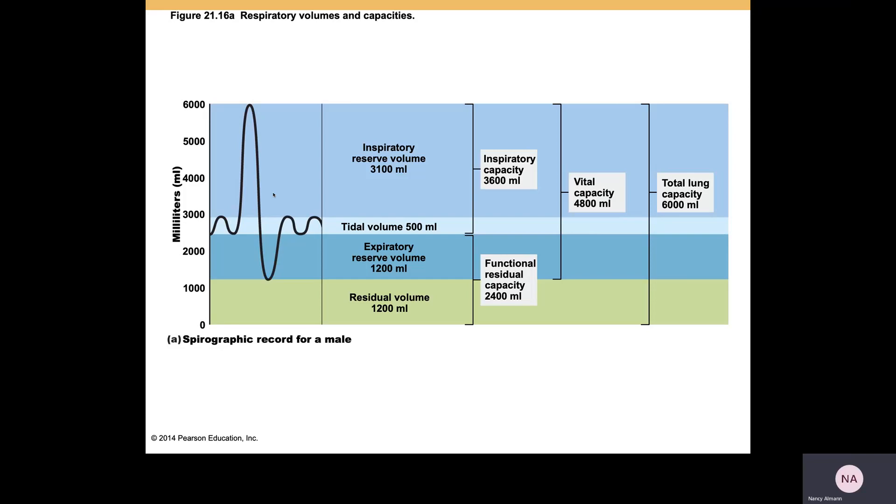The residual volume is about 1,200 milliliters, and that is the amount of gas or air that is always in your lungs. Now, why might you always need to have some gas in your lungs? Don't you need to make sure that you get rid of all of it when you expire? Think about that, and we'll discuss why that is important as we go forward.